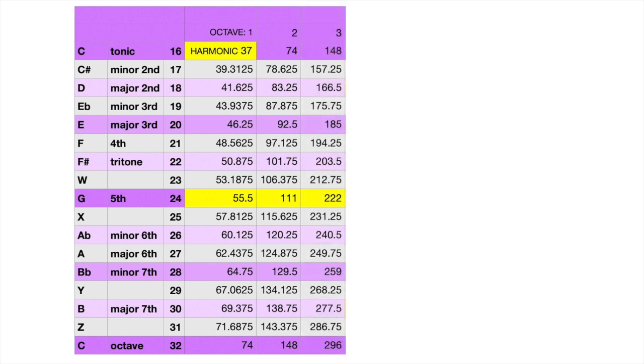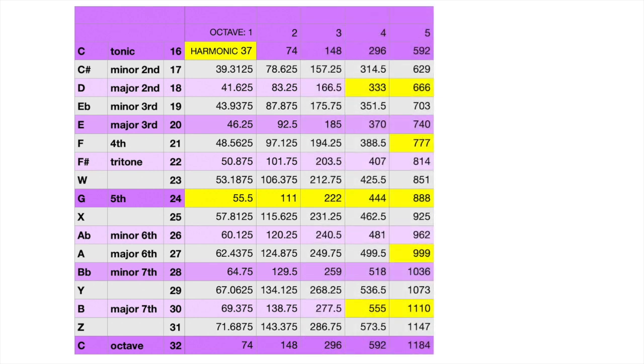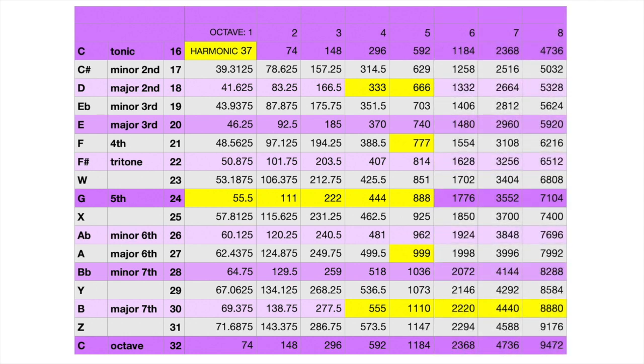With each successive octave, we see more of the angel numbers generating as tones. It's noteworthy that the angel numbers avoid any minor positions in the scale. They also avoid the tritone and its partner, the phantom W note.